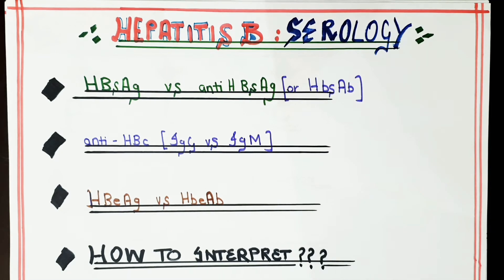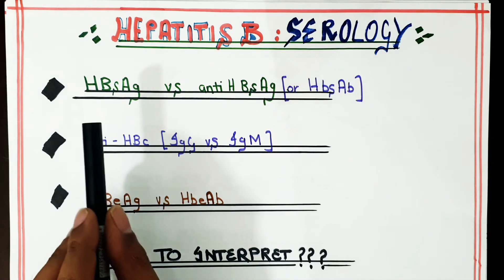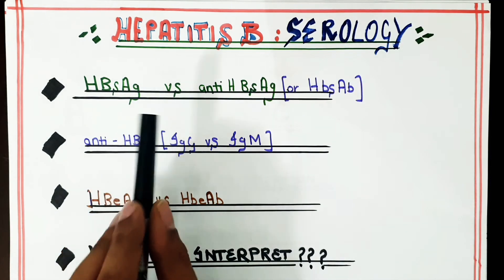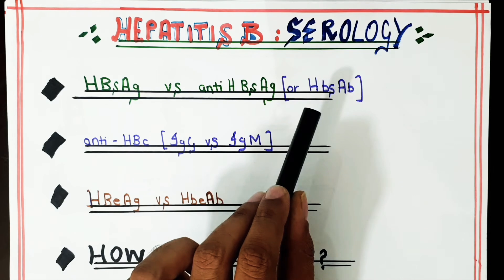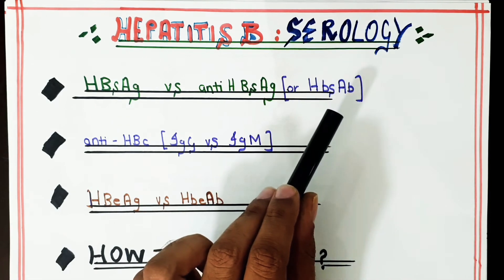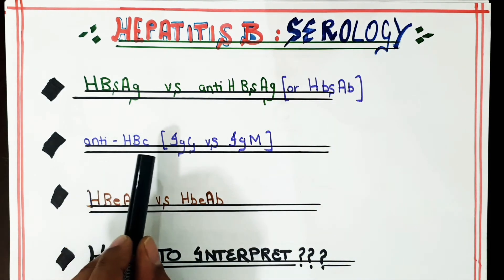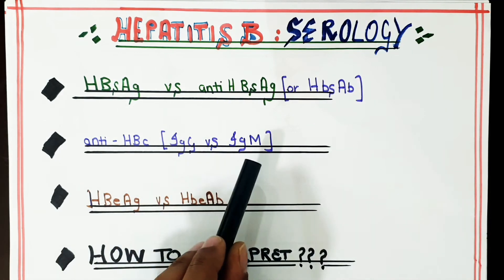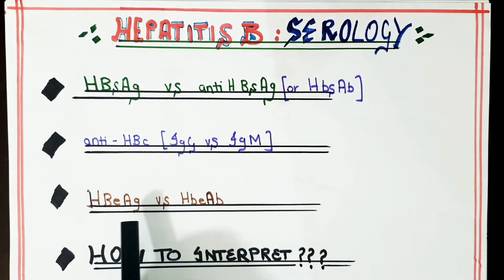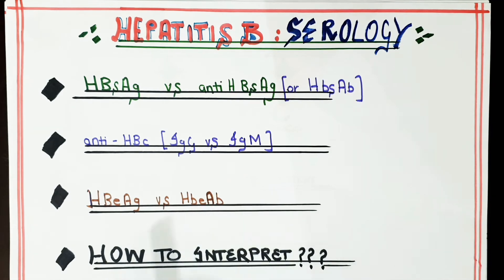The different markers needed to interpret Hepatitis B serology are: the HBs antigen versus the HBs antibody, the anti-HBc IgG versus IgM, and the HBe antigen versus the HBe antibody. We will discuss all of these in the next few slides.